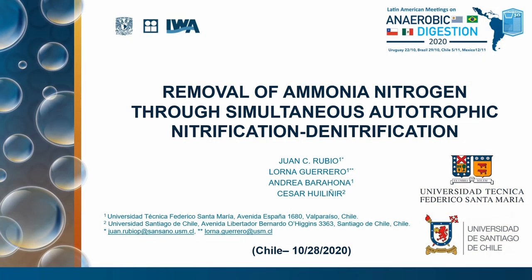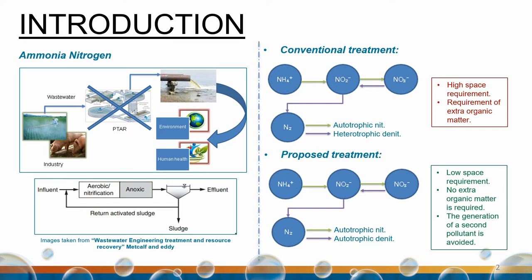Bom dia, sou Juan Carlos Rubio, estudante da Universidade Técnica Federico de Santa Maria, e vou apresentar os resultados obtidos no estudo de remoção de nitrogênio amoniacal através da nitrificação e denitrificação autótrofa simultânea. A problemática é o tratamento de resíduos industriais líquidos com alto conteúdo de nitrogênio amoniacal, que causa eutrofização nos ecossistemas hídricos e pode causar a doença do Bebê Azul se a água for usada para consumo humano. Atualmente utilizam-se processos biológicos de nitrificação e denitrificação em reatores separados — a proposta deste estudo é levar a cabo esse processo dentro do mesmo reator, reduzindo o requerimento de espaço e utilizando processos autótrofos que eliminam o requerimento extra de carga orgânica.